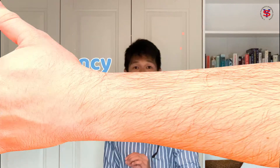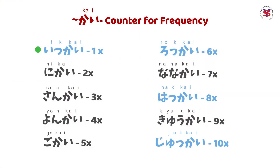Next naman si Frequency. So kung magbibilang tayo ng beses, ang gamit natin dito is kai. So that's ik-kai, ni-kai, san-kai, yon-kai, and so on.